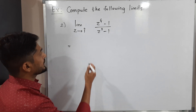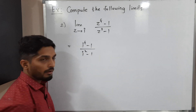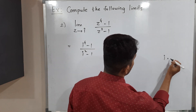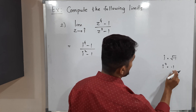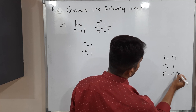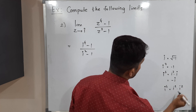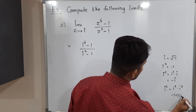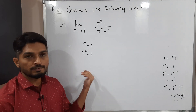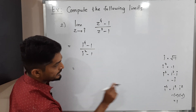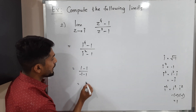Substituting z = i: we get (i⁴ − 1) / (i² − 1). We recall the higher powers of i: i² = −1, i³ = i² × i = −i, and i⁴ = i² × i² = (−1)(−1) = 1. So the numerator becomes 1 − 1 = 0, and the denominator becomes −1 − 1 = −2. Therefore the expression equals 0 / (−2) = 0.